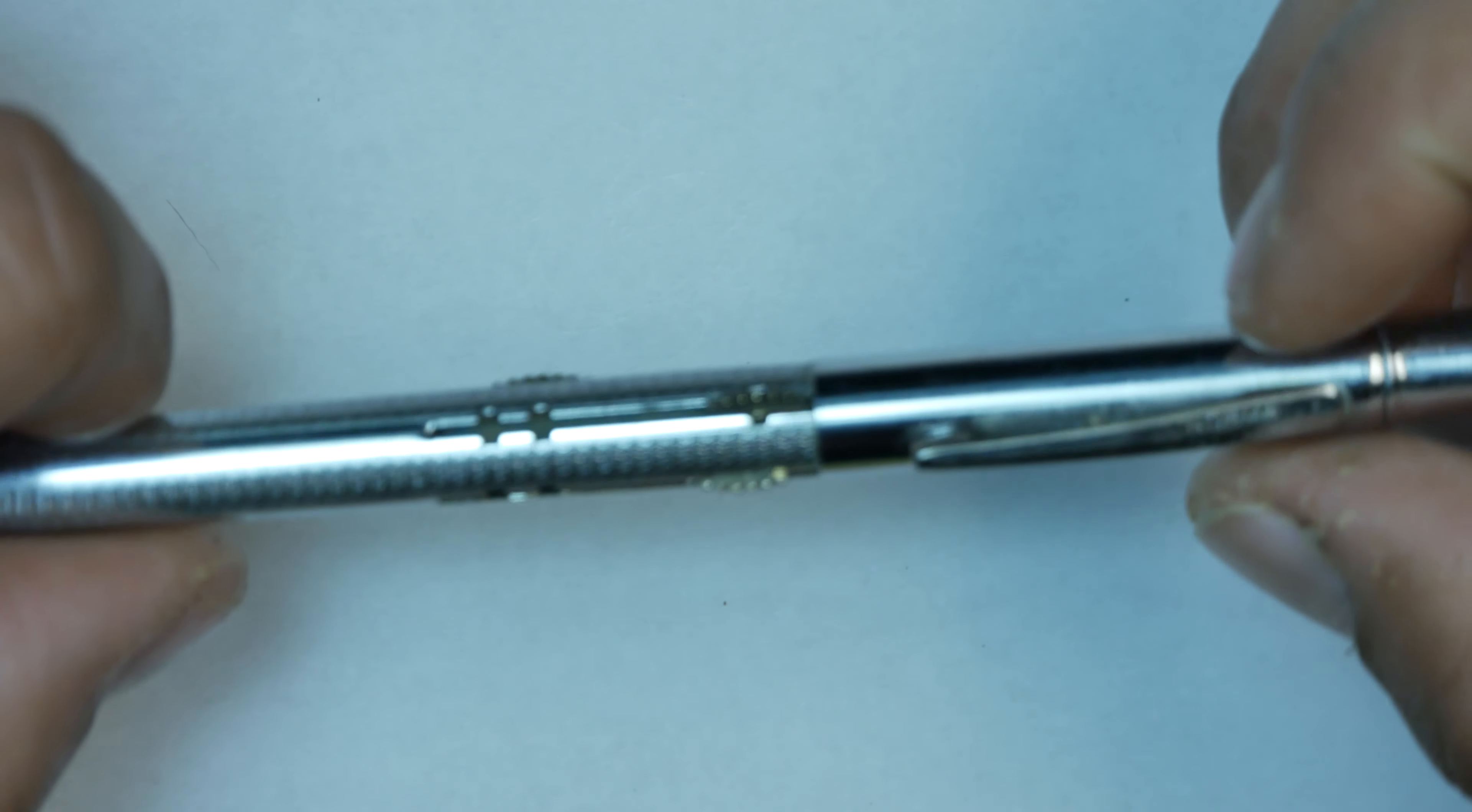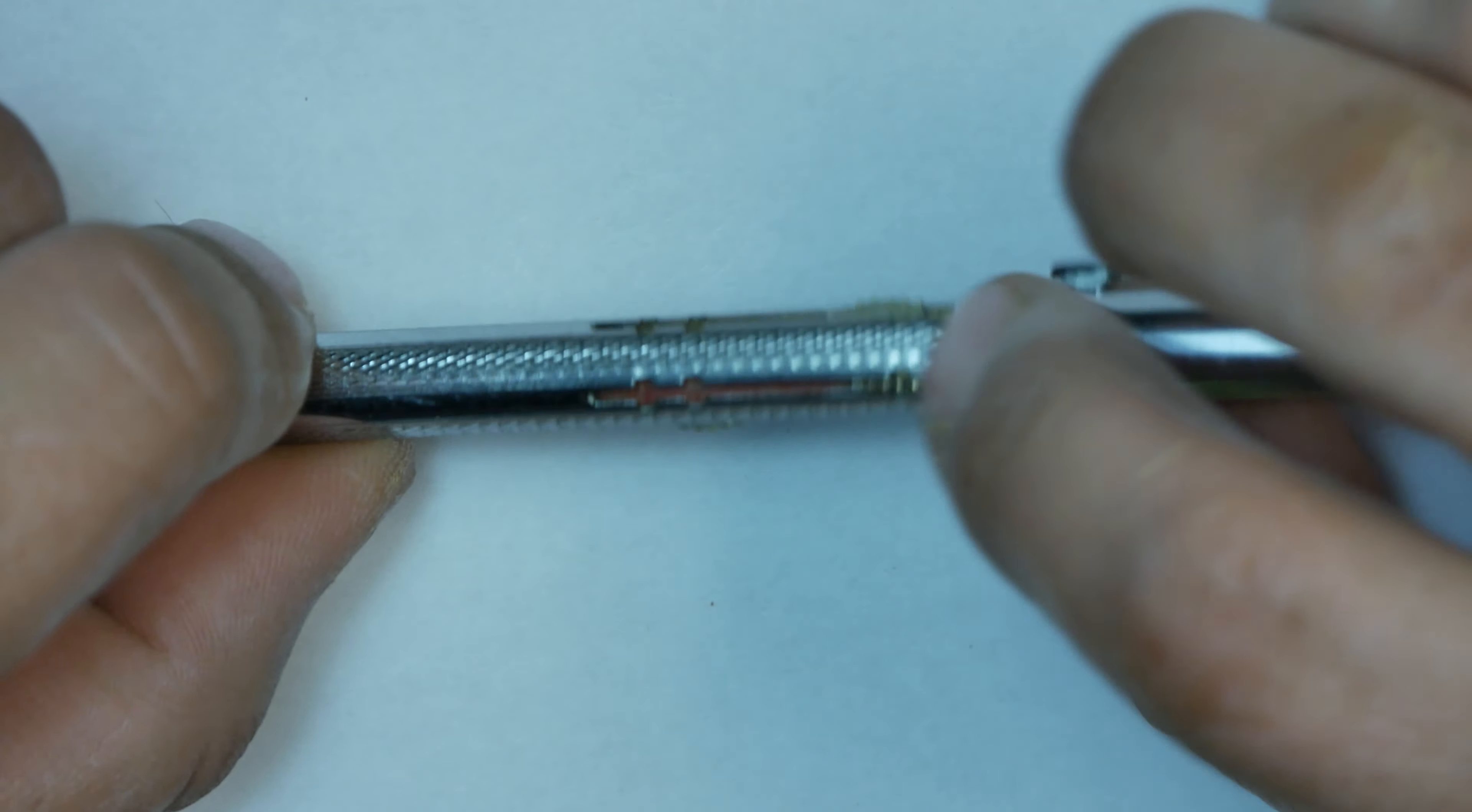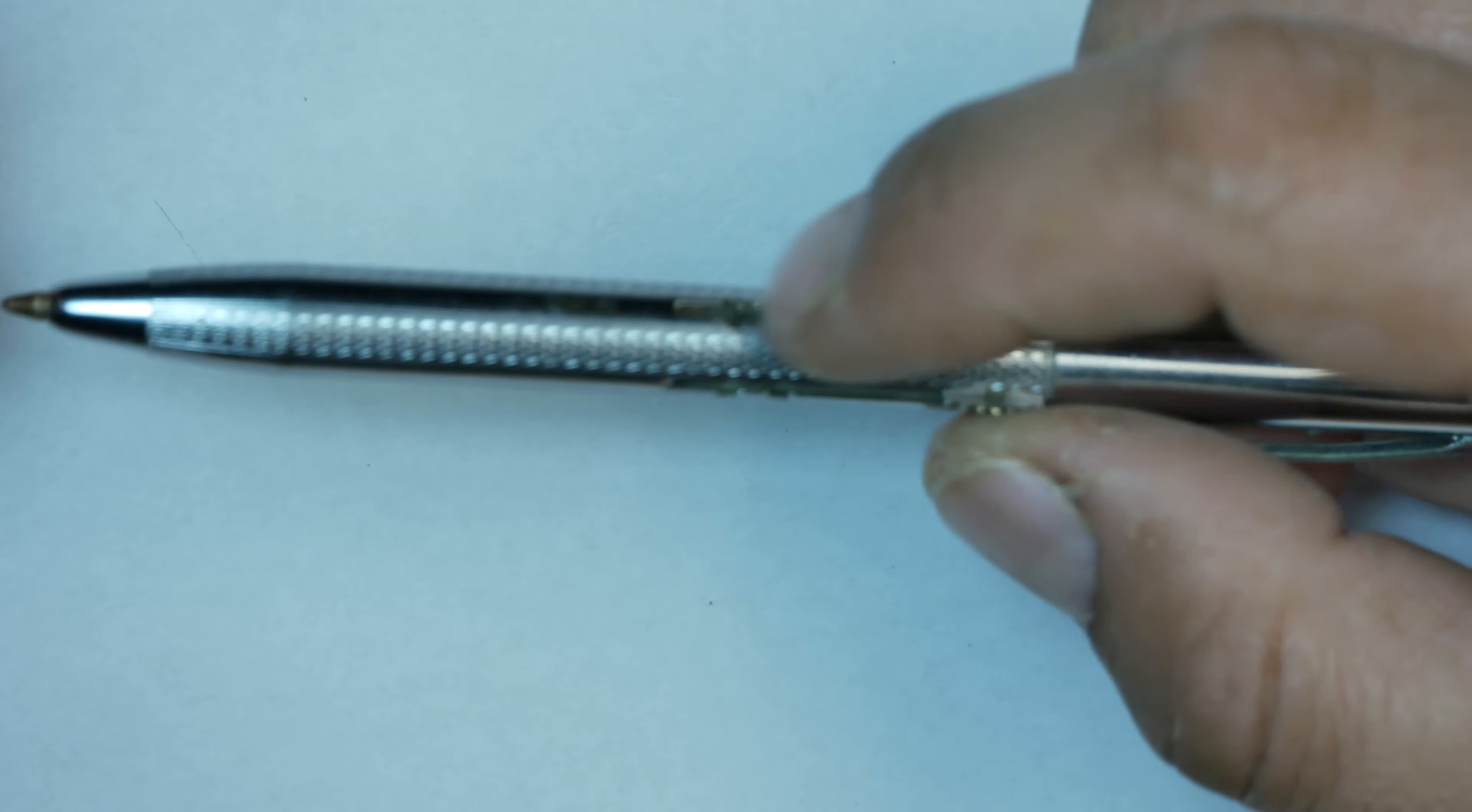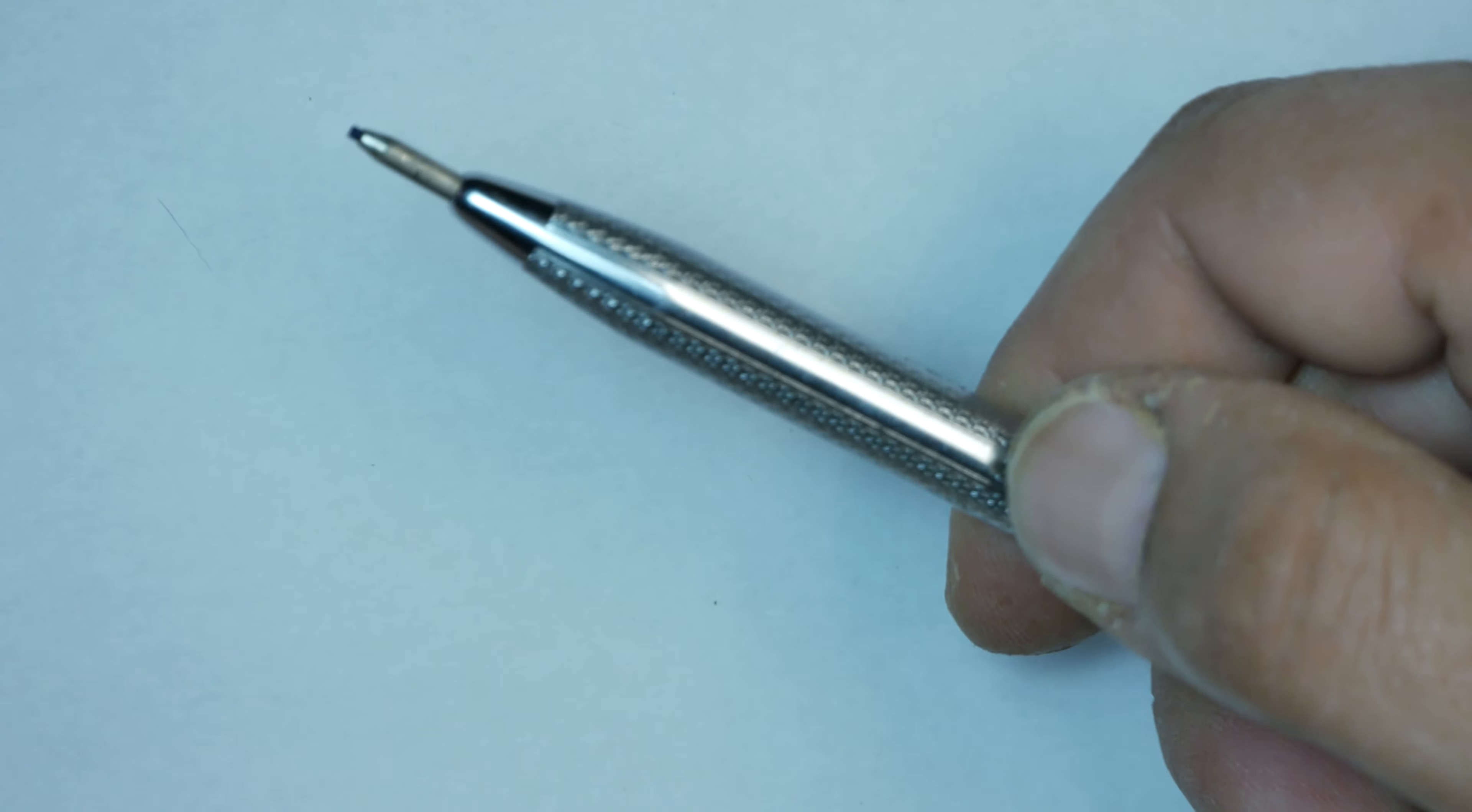This is way too nice of a collector's piece for somebody not to get that working. To have a working 1950s four-way Norma pen, what an awesome thing to have. So I will work on that. Let's retract the pen. Let's see what else we have in here.